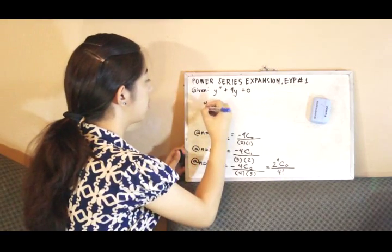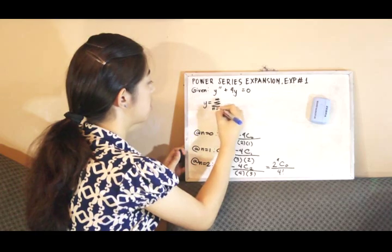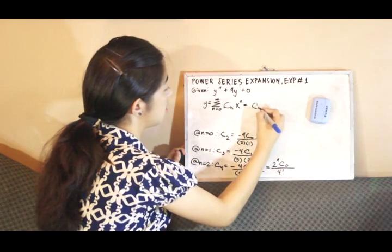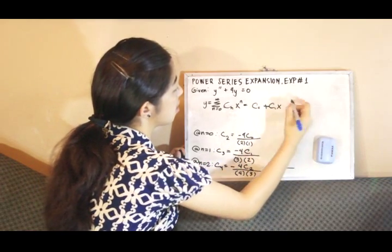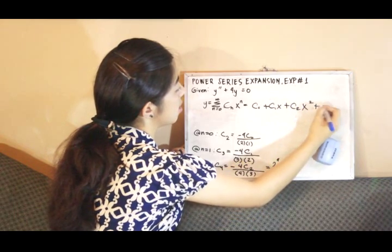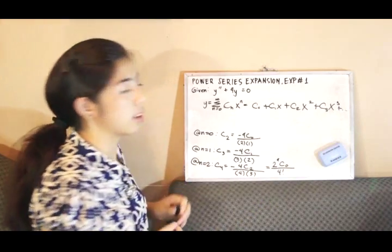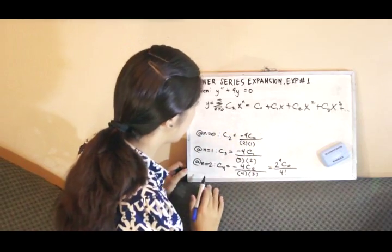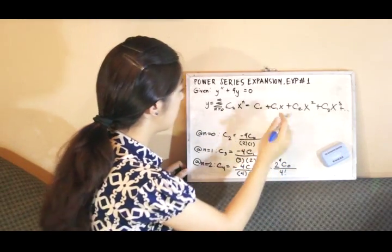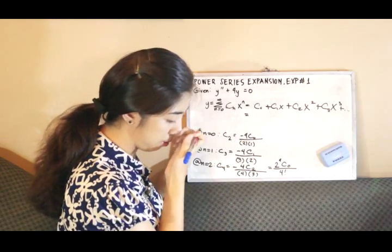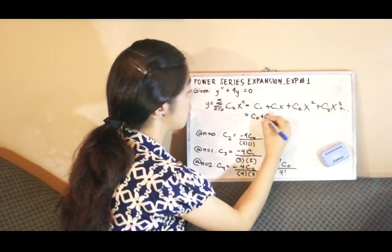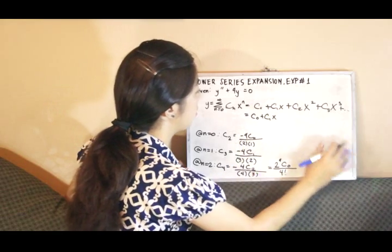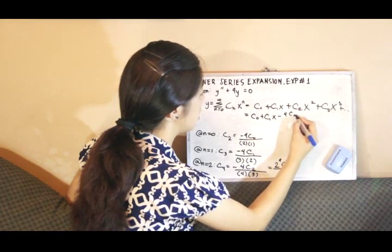So we have y as the summation from n equals zero of c sub n x raised to n, which expands as c sub zero plus c sub 1 x plus c sub 2 x squared plus c sub 3 x cubed, and so on. Continuing, we can arrange the terms in this manner.